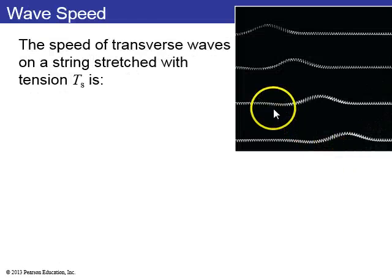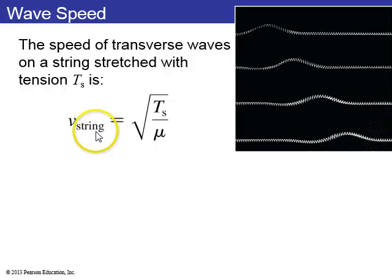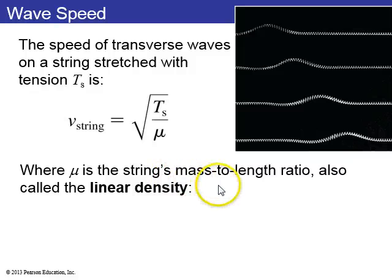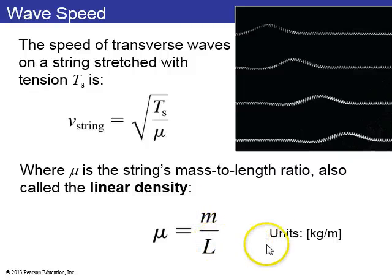If you have a wave on a string, or a stretched spring that has some tension, then you can find the speed of the wave is the square root of the tension divided by mu, where mu is the string's mass-to-length ratio, also called the linear density. The equation for mu is the mass of the string divided by the length, or the mass of some part of the string divided by the length of that part. So the units are kilograms per meter. And this makes sense, right? If you increase the tension of a string, then waves move faster along the string. If you keep the tension fixed and increase the mass density of the string, then waves travel more slowly along that string.